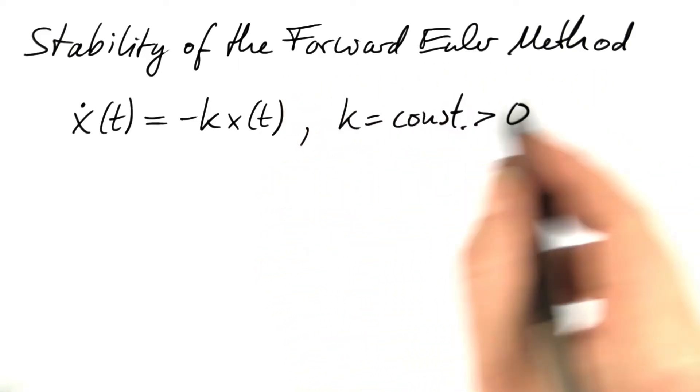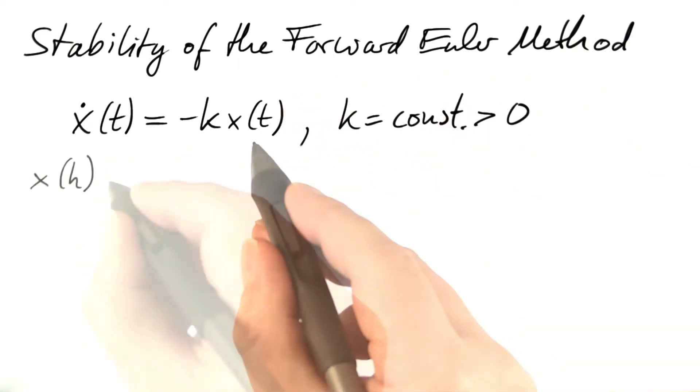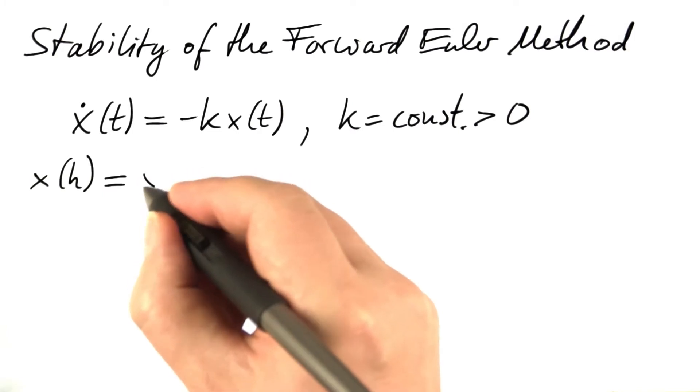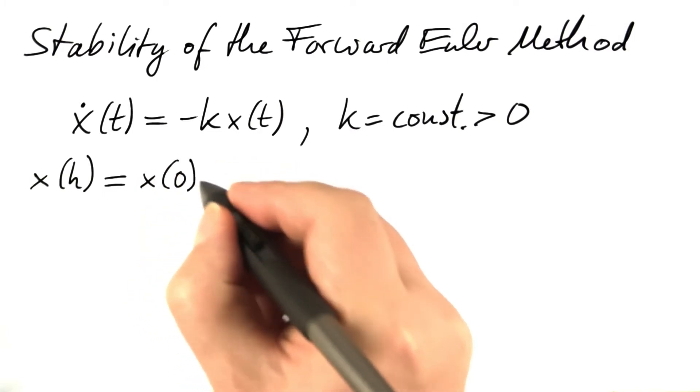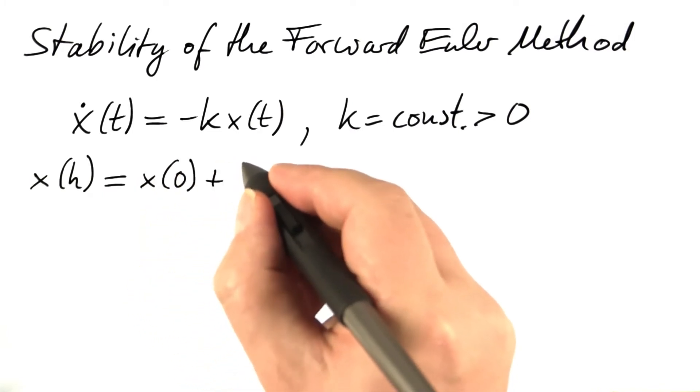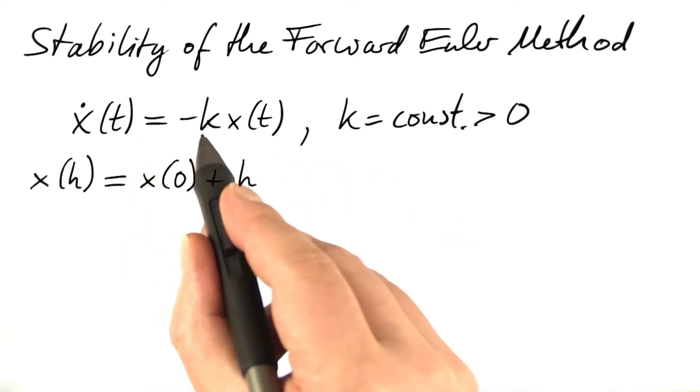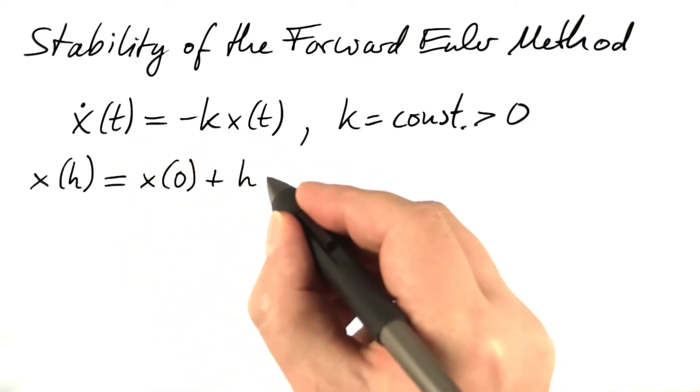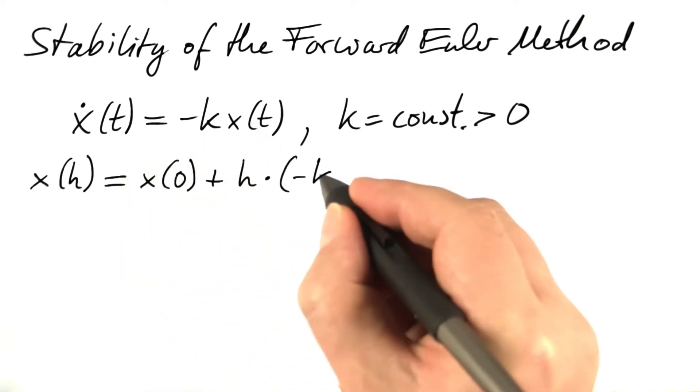Let's look at what the forward Euler method does to this equation. x after the first step will be the initial value of x plus the time step times the rate of change at the initial time, the rate of change at time zero.